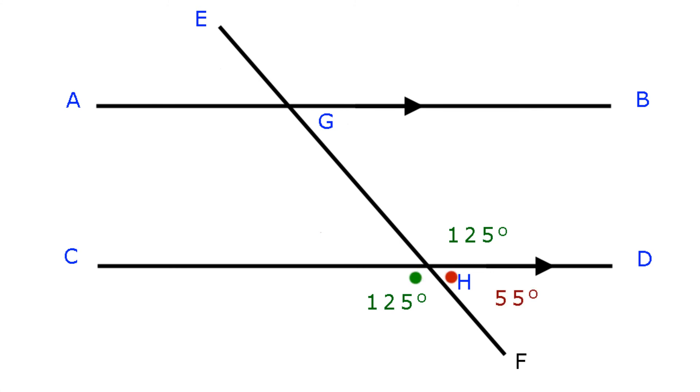Angle CHF plus angle FHD equals 180 degrees. They're supplementary angles. Therefore angle FHD equals 55 degrees. Angle CHG equals FHD, they're vertically opposite angles. Therefore angle CHG equals 55 degrees.